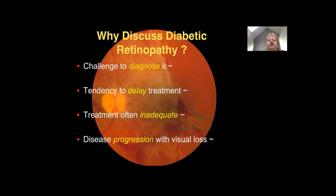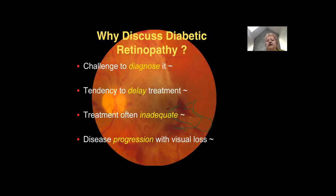So why should we discuss diabetic retinopathy? It's quite a challenge to diagnose. There's a tendency to delay treatment — patients go from one clinic to the next without a decision being made to initiate intervention. Often the treatment is inadequate; many patients come to the retina clinic undertreated. The disease is progressive, going through a natural life cycle from mild to moderate to severe over a few years. It's our job to make the diagnosis, grade the level of disease, and intervene with our very effective treatments prior to permanent structural damage or progression to blindness.